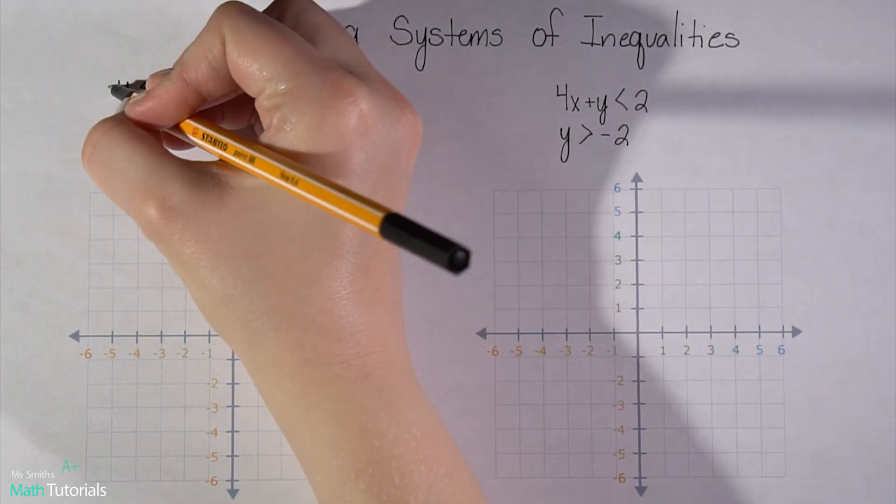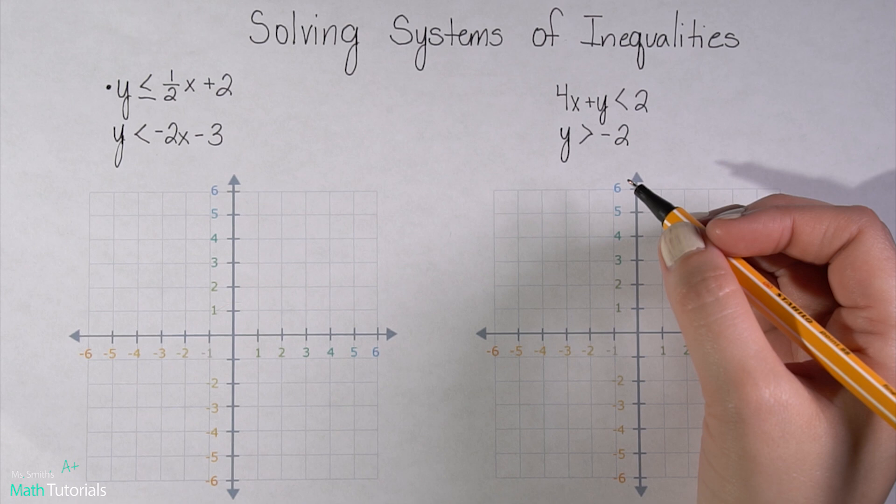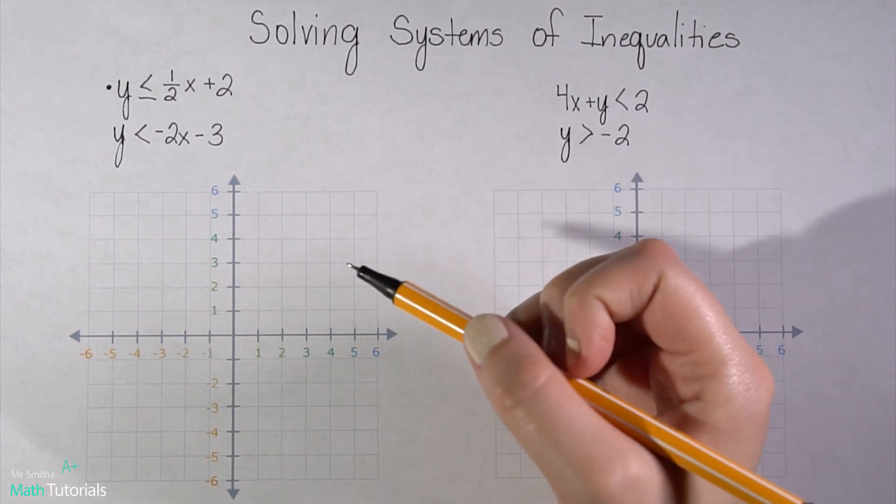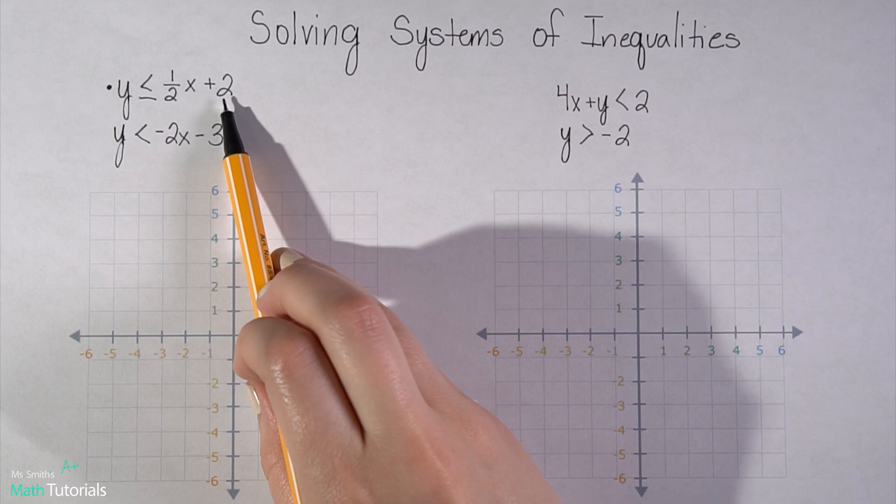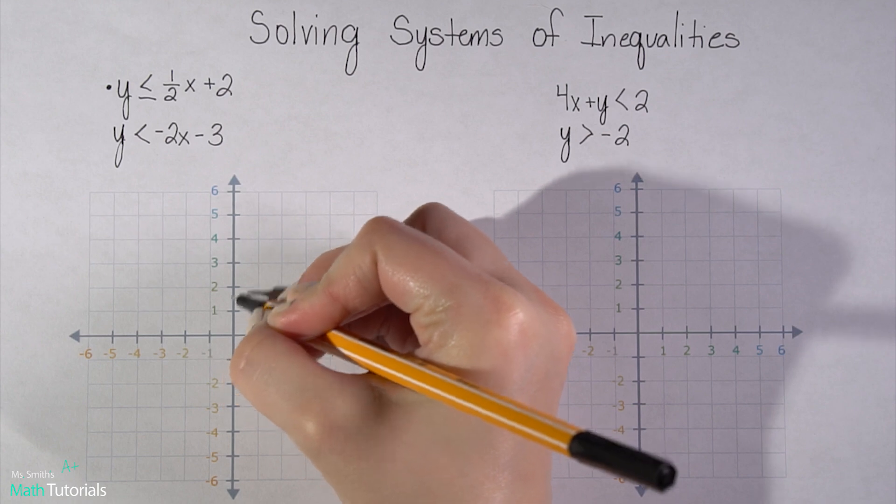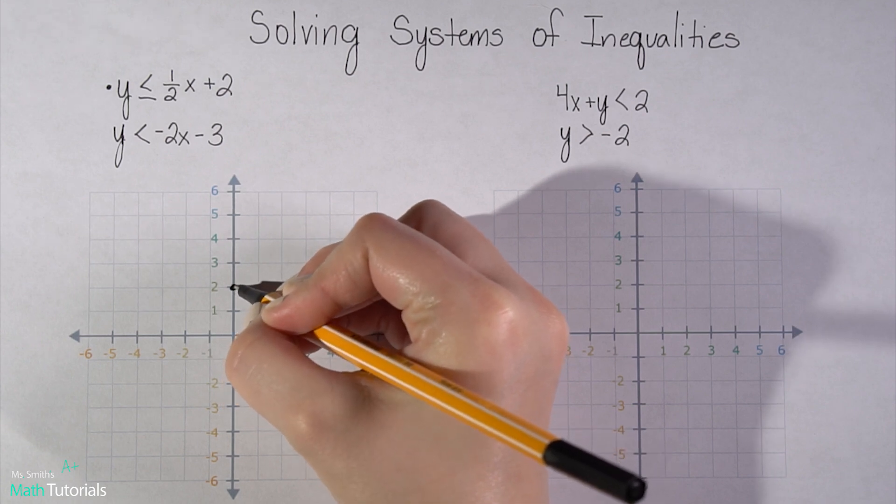So let's graph this first line. I'm going to do it in black. Graphing the exact same way as we would a regular equation, I'm going to plot my first point at my b value. So my y intercept is at positive two. So here I go, one, two. That's my y intercept point.